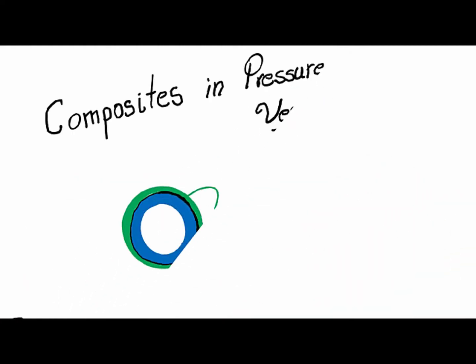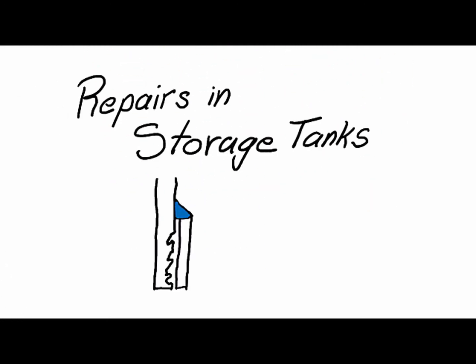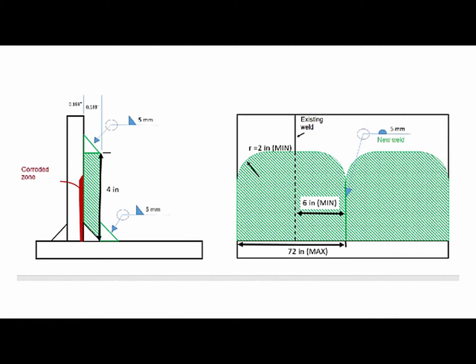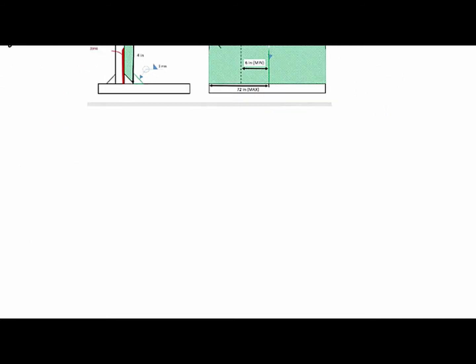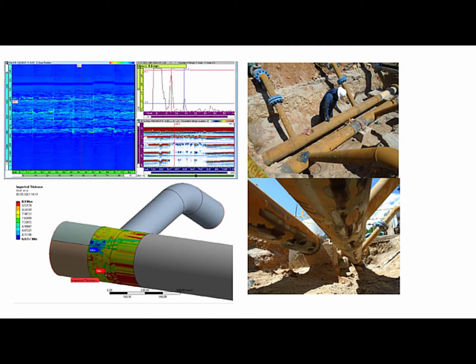The first one is related to composites in pressure vessels. Secondly, we will see an overview on repairs in storage tanks. For example, here we have a lab patch repaired in a corroded area. And finally, we will see how to incorporate actual measurements from inspection into your FEA model, in order to see if it passed the elastic-plastic analysis. I hope you enjoyed it and let's get started.